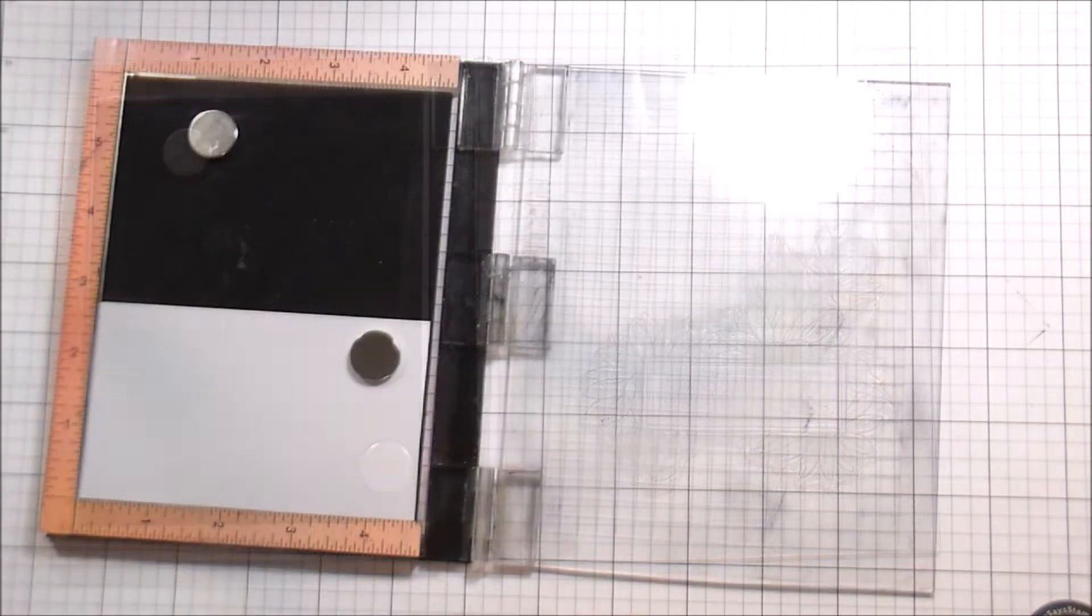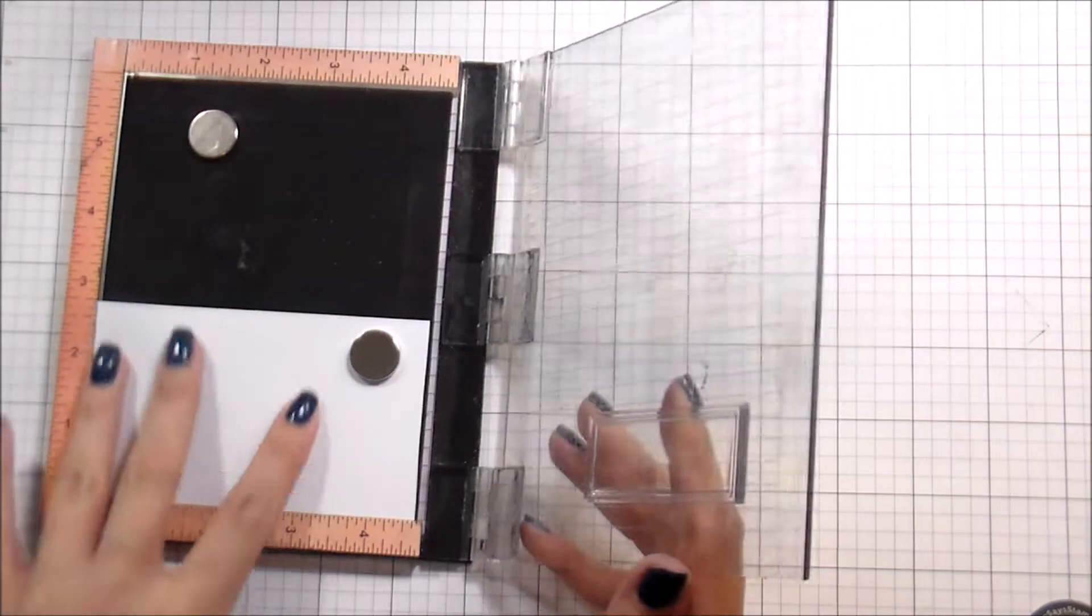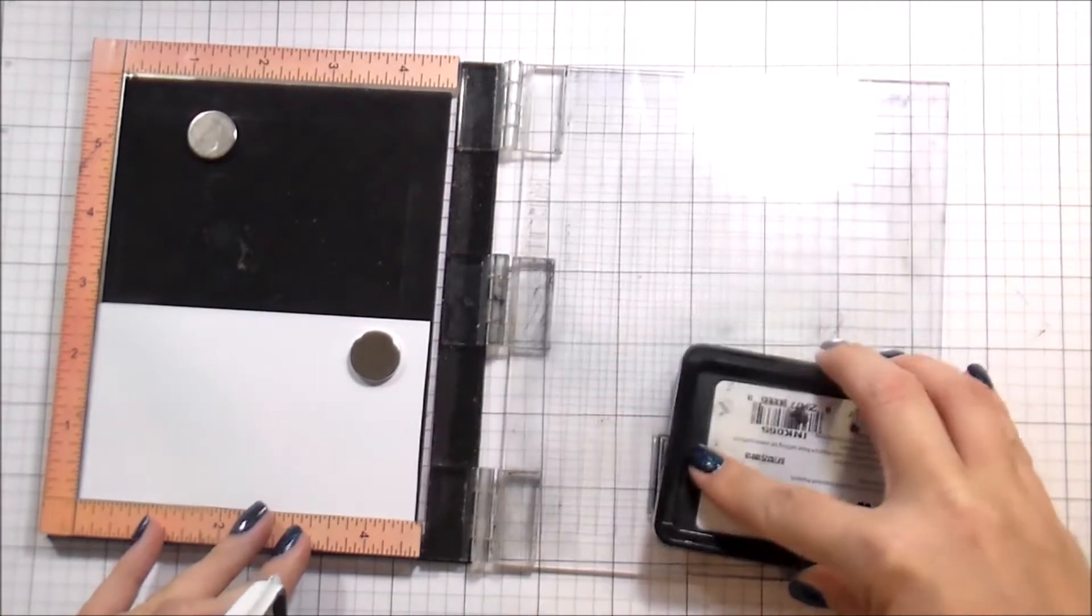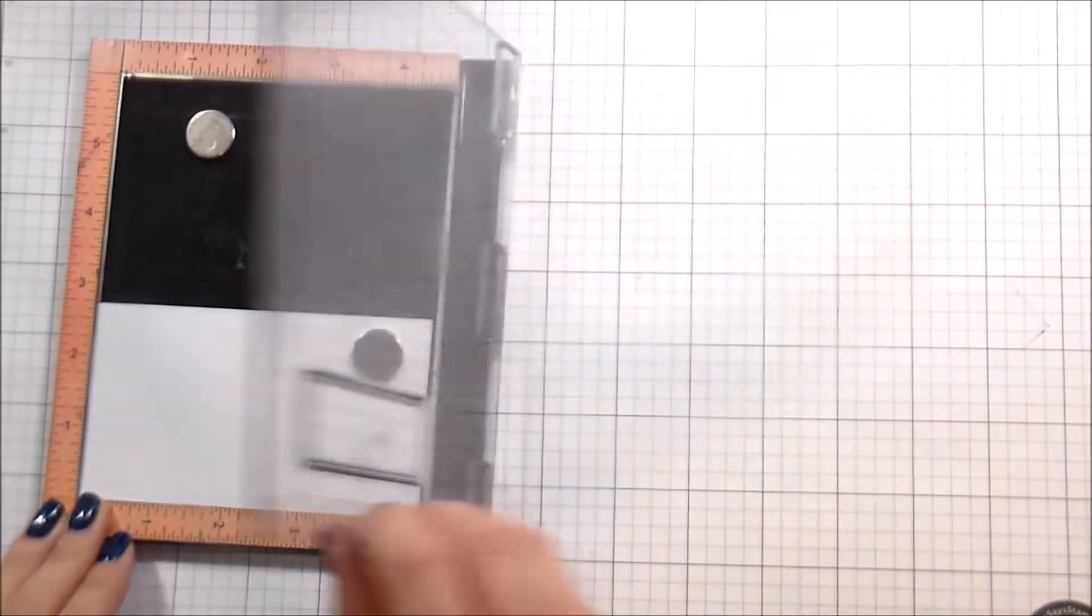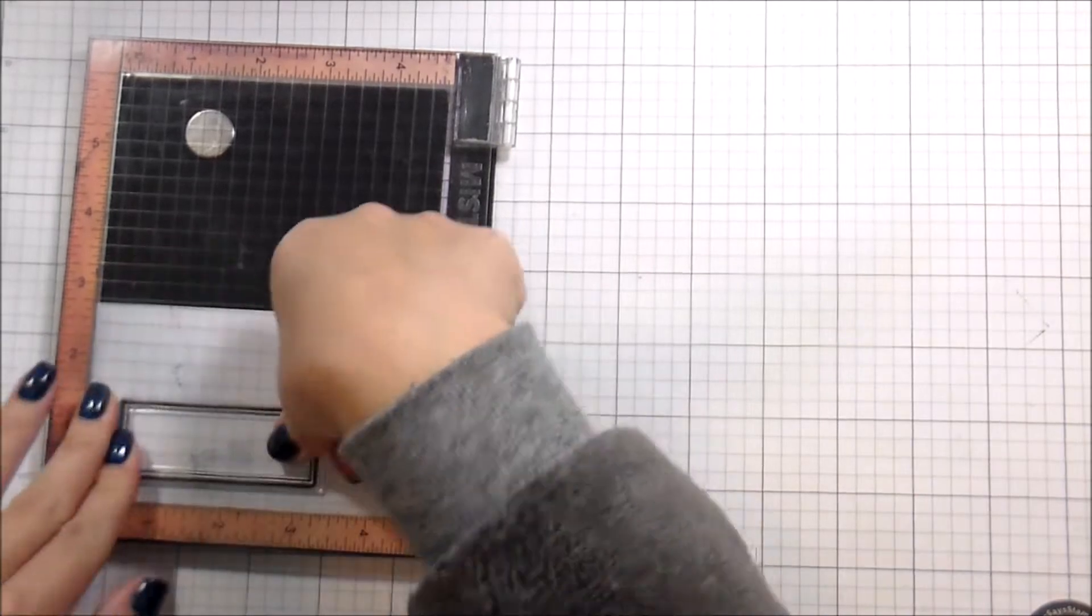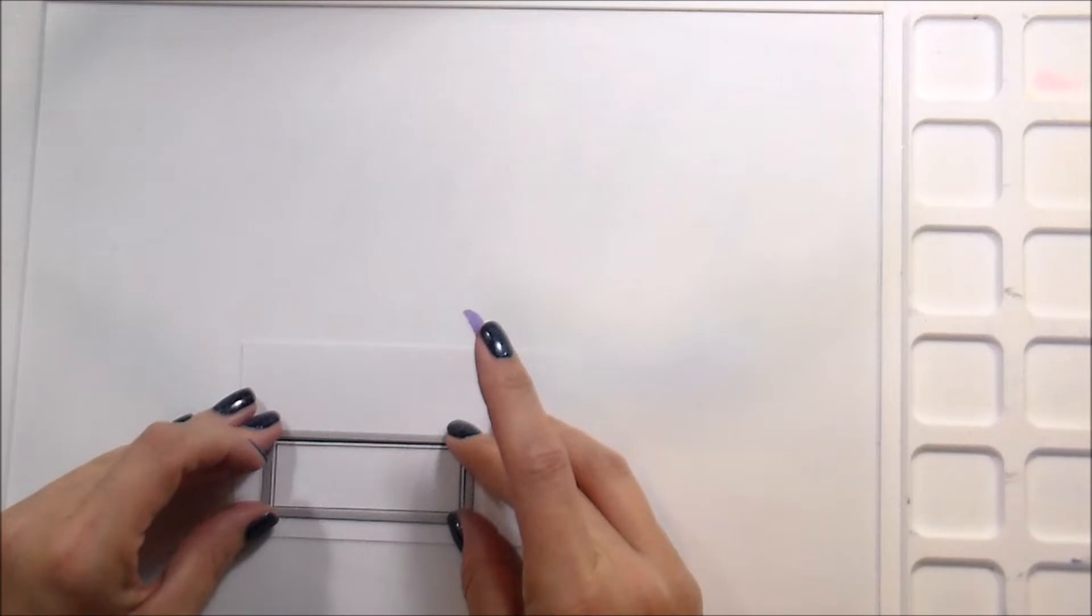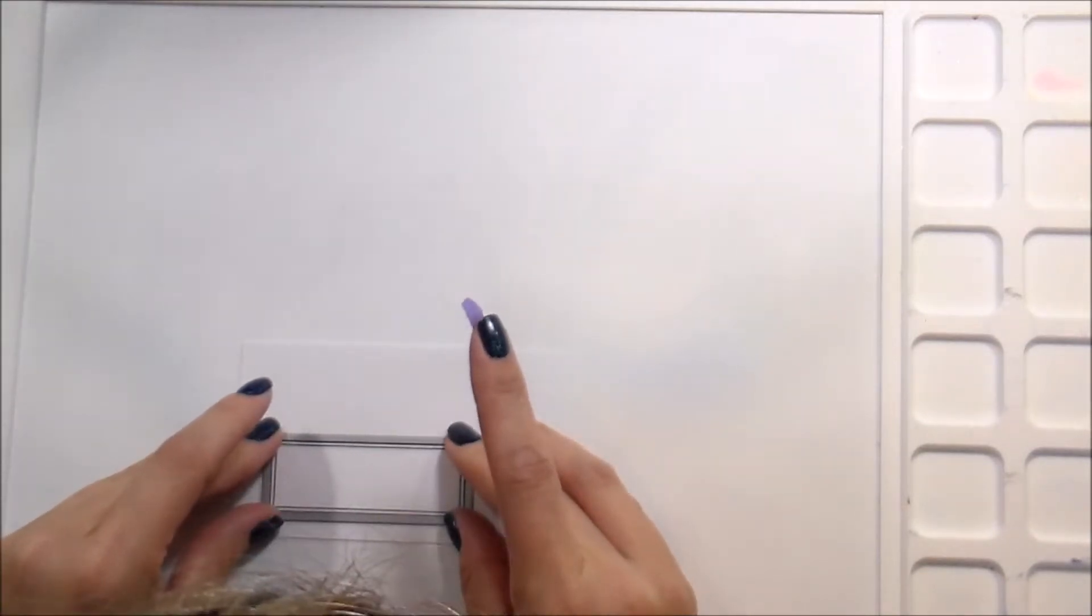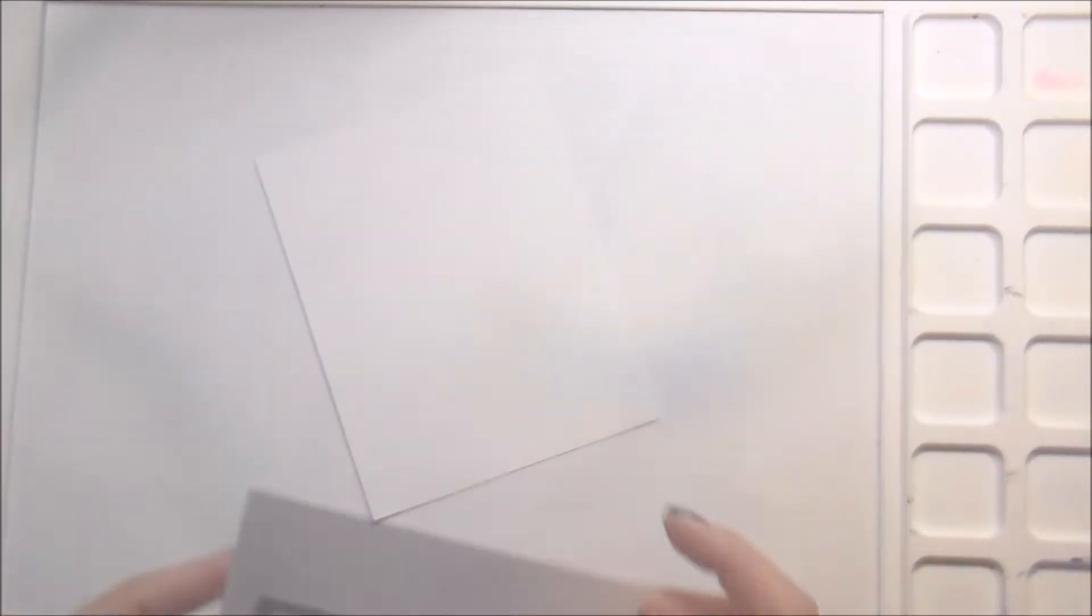I'm also using the Simply Said which has some decorative squares in it and one of them matches the square in that particular flower bouquet perfectly. So I stamp that out as well and then I'm going to use the matching die to die cut that out. And then I'm just going to set it aside and work on the background.